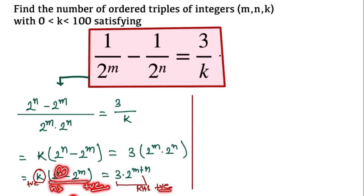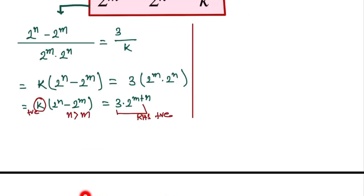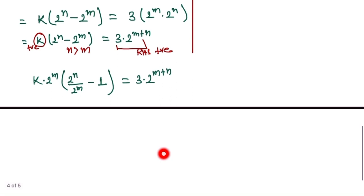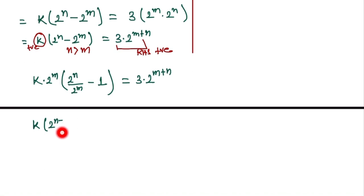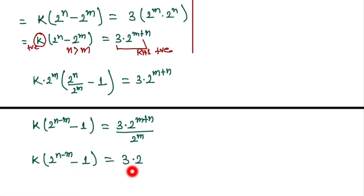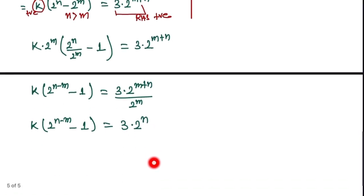Since the left side must be positive, we consider n greater than m. We take 2^m as a common factor: k times 2^m times (2^(n-m) minus 1) equals 3 times 2^(m+n). Dividing both sides by 2^m, we get: k times (2^(n-m) minus 1) equals 3 times 2^m.